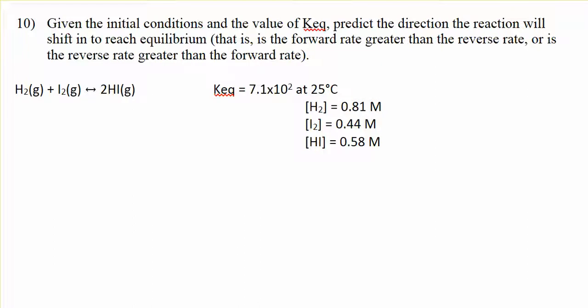Given the initial conditions and the value of Keq, predict the direction the reaction will shift in order to reach equilibrium. That is, is the forward rate greater than the reverse rate, or is the reverse rate initially greater than the forward rate?